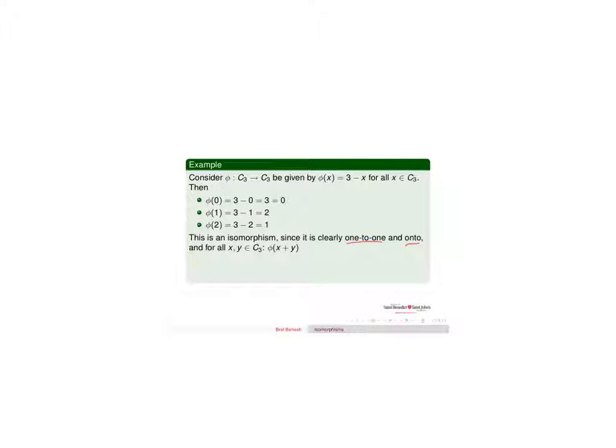It's definitely one-to-one and onto because there's only one way to get 0, you have to put in 0. Only one way to get 2, only one way to get 1, and all elements 0, 1, and 2 are hit.